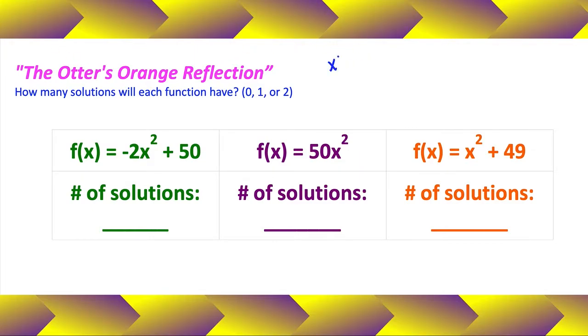If you have an x squared and that equals a positive number, guess what? You're going to have two solutions. If you ever have x squared equals zero, you're going to have exactly one solution. And if you ever end up with x squared equals a negative number, you're going to have exactly no solution.